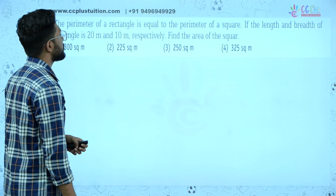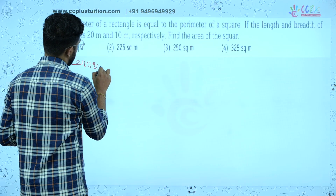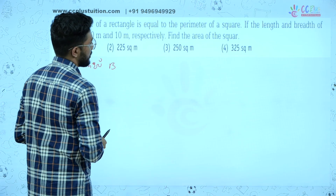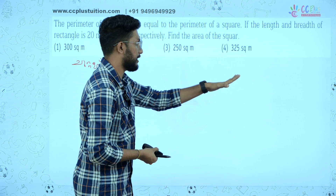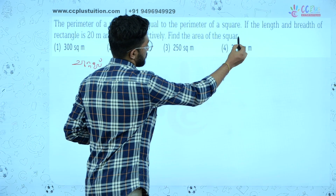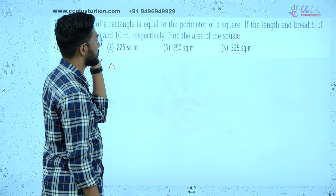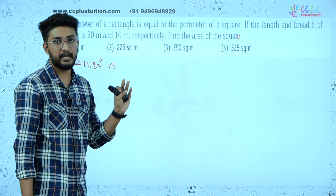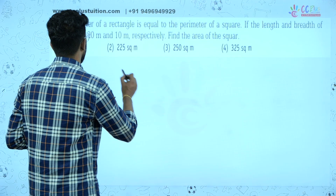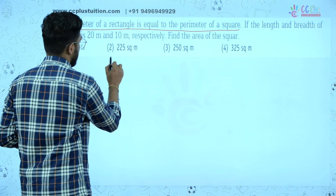Question 2: The perimeter of a rectangle is equal to the perimeter of a square. What is the perimeter of the rectangle? The perimeter of a rectangle equals P of a square.